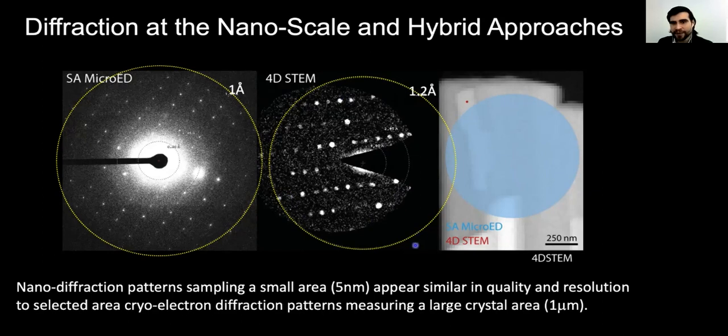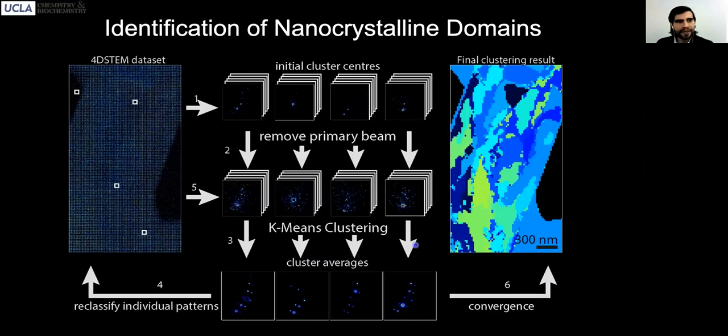Importantly, because the beam is so small, you can raster the beam across a sample and obtain structural information and variations in structural information within a field of view. You can see here an algorithm that is meant to separate the various different types of patterns, diffraction patterns that you might obtain from a single field of view, averaging those that are similar and producing representative diffraction patterns from different regions of a single crystal.